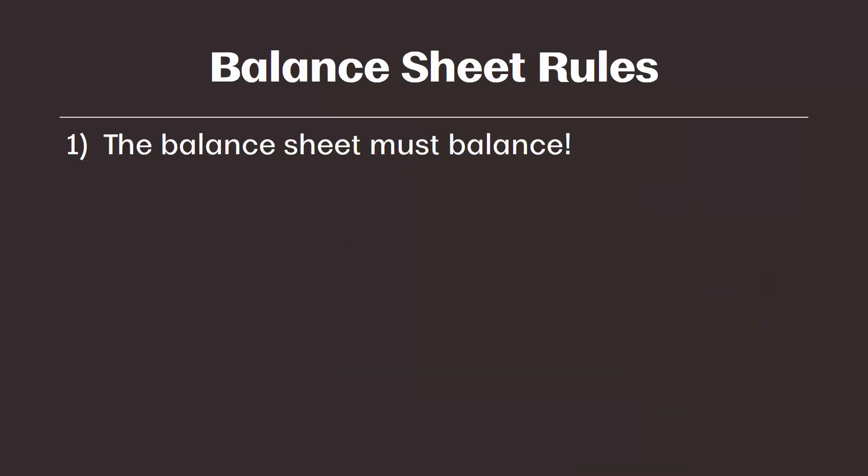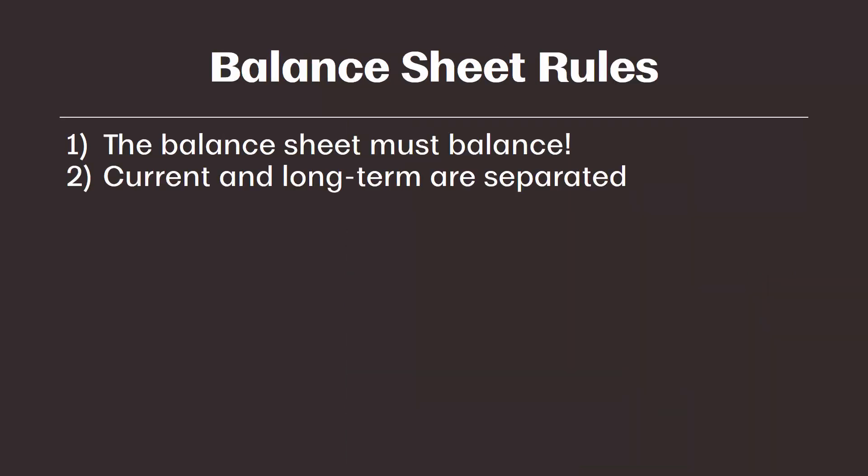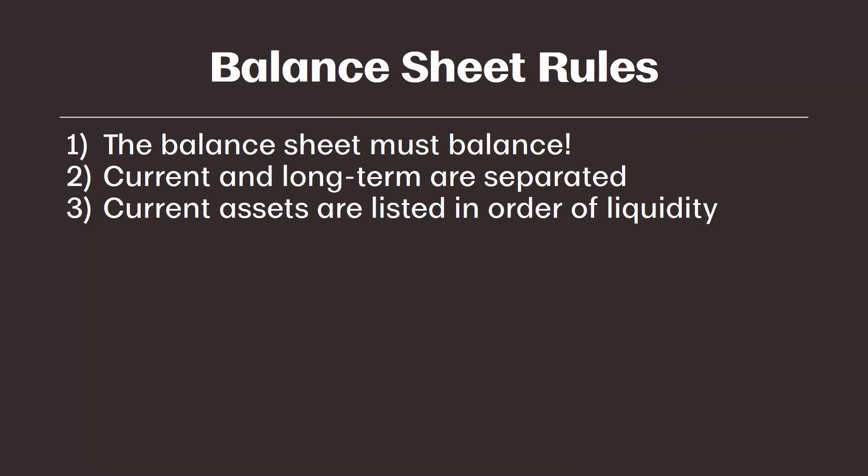Let's look at a couple more rules. We already learned that current and long-term assets and liabilities have to be listed separately. We also learned that current assets have to be listed in the order of liquidity. Just make sure you note those things again here.